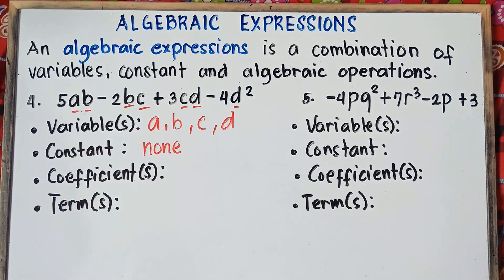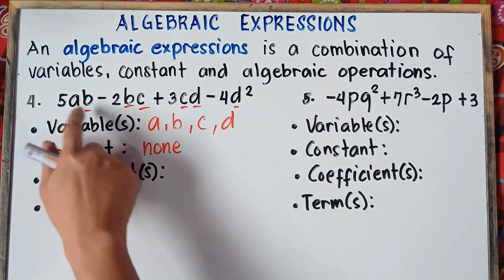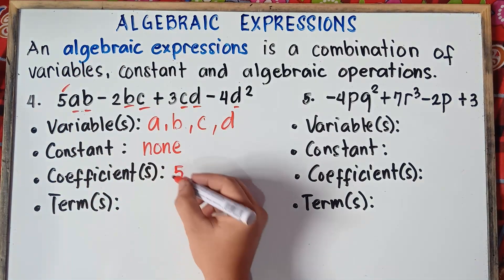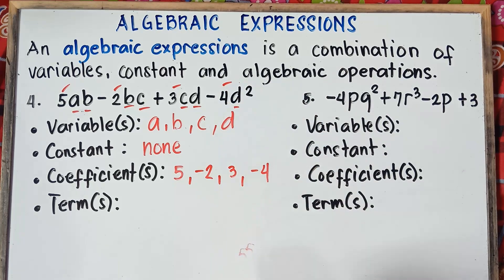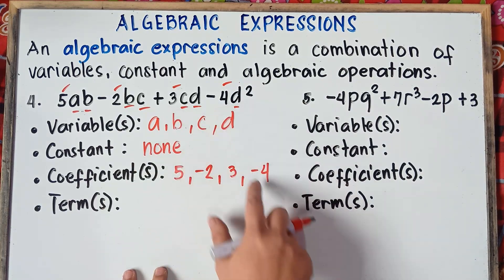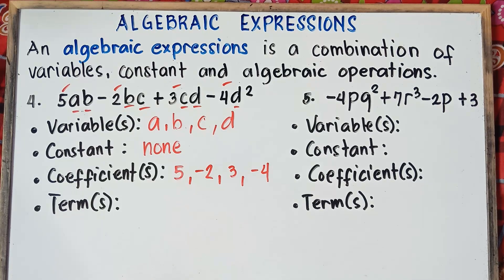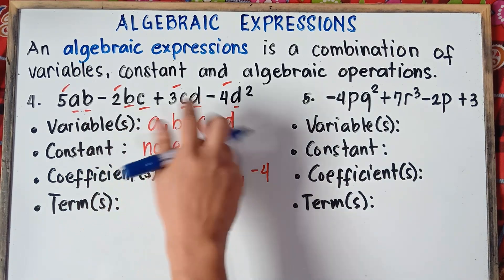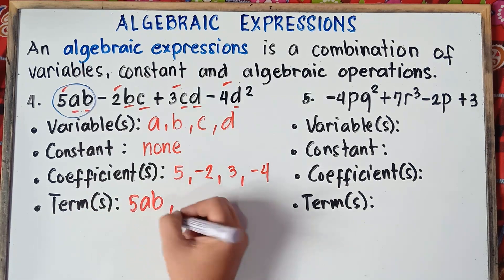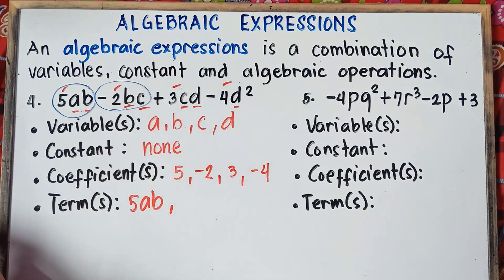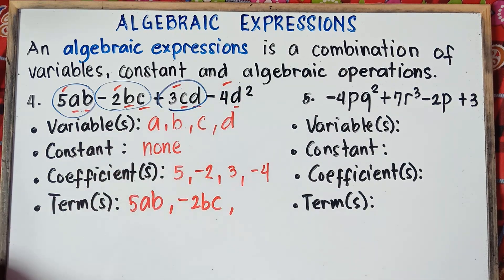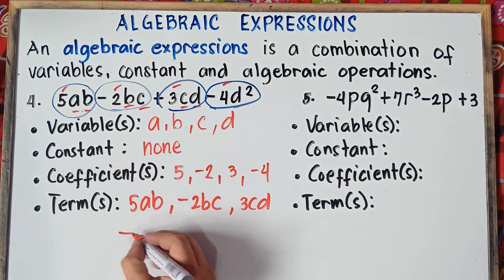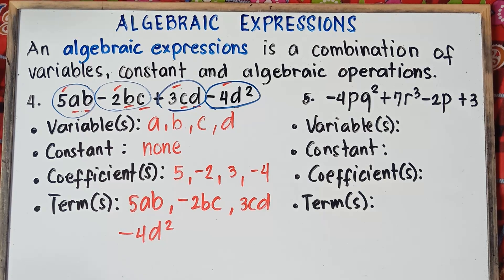Coefficients are the numbers that multiply the variables: positive 5, negative 2, positive 3, and negative 4. Always include the minus sign. Terms separated by plus or minus signs: first term is positive 5ab, second term is negative 2bc, third term is positive 3cd, and last term is negative 4d squared. That's it for example number 4.